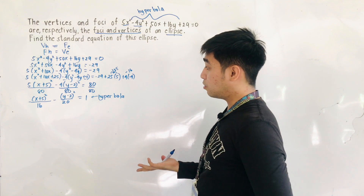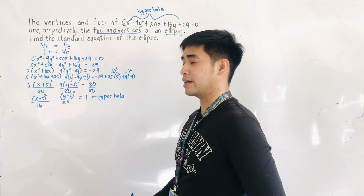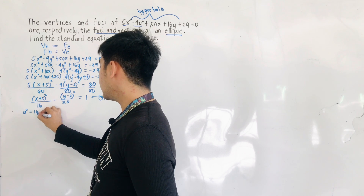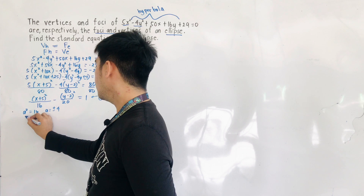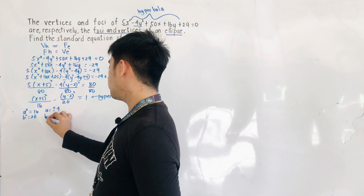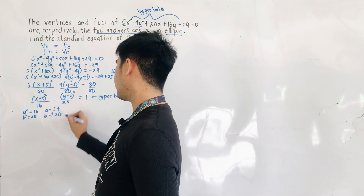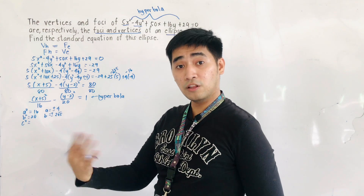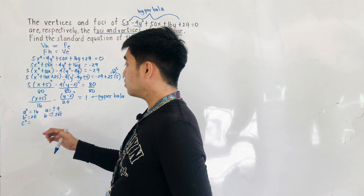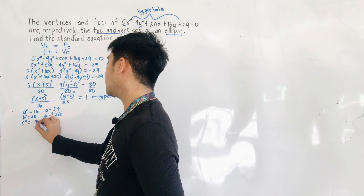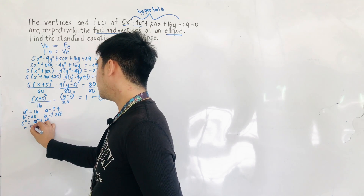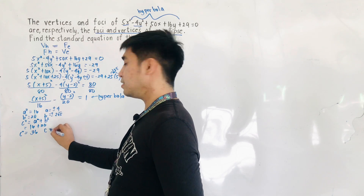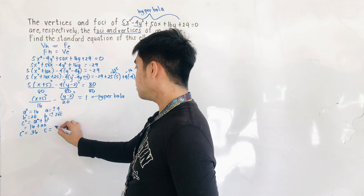We can now get the coordinates of the center, vertices, and foci. a² equals 16, therefore a equals plus or minus 4. b² equals 20, therefore b equals plus or minus the square root of 20, or 2 square root of 5. Since this is a hyperbola, c is the largest among the three variables. c² equals a² plus b², which gives 16 plus 20, so c² equals 36, and therefore c equals plus or minus 6.